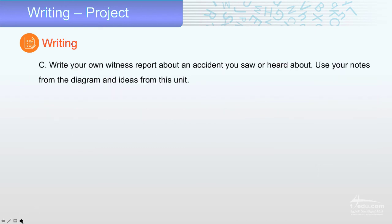Now write your own witness report about an accident. Don't forget the W's: what, where, when, how, and why. Write about an accident you saw or heard about. Use your notes from the diagram and ideas from this unit.